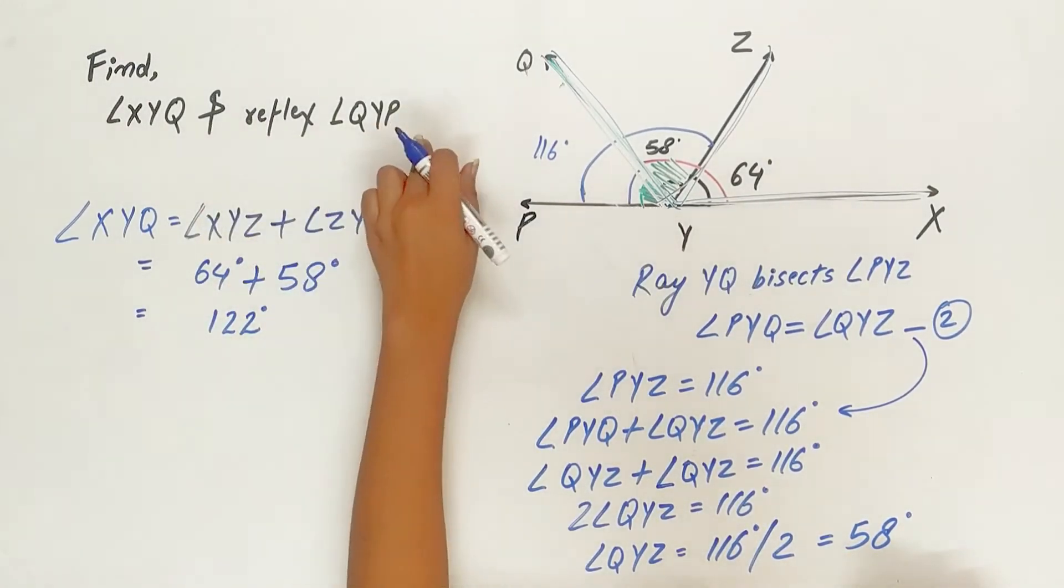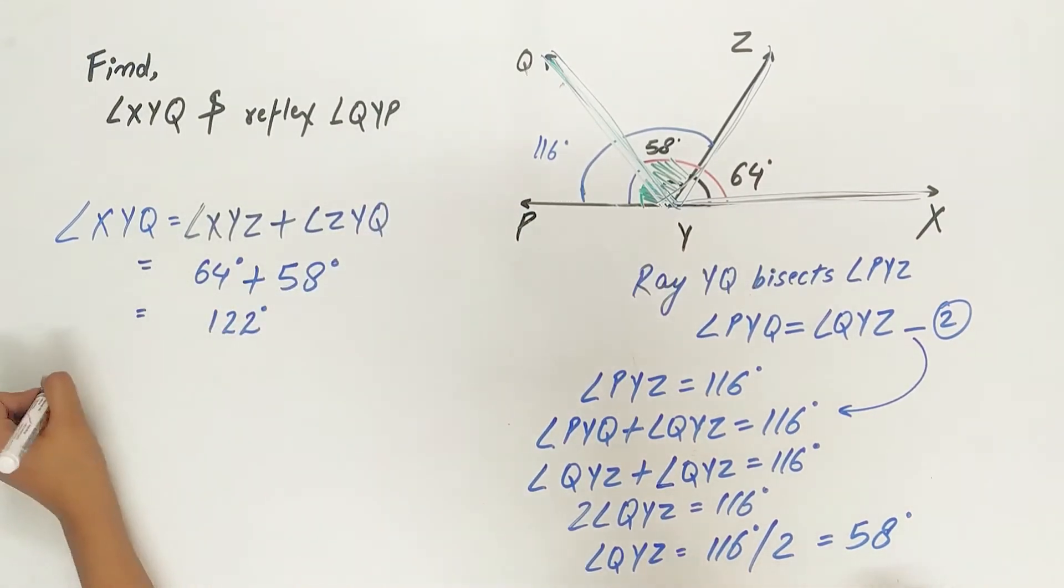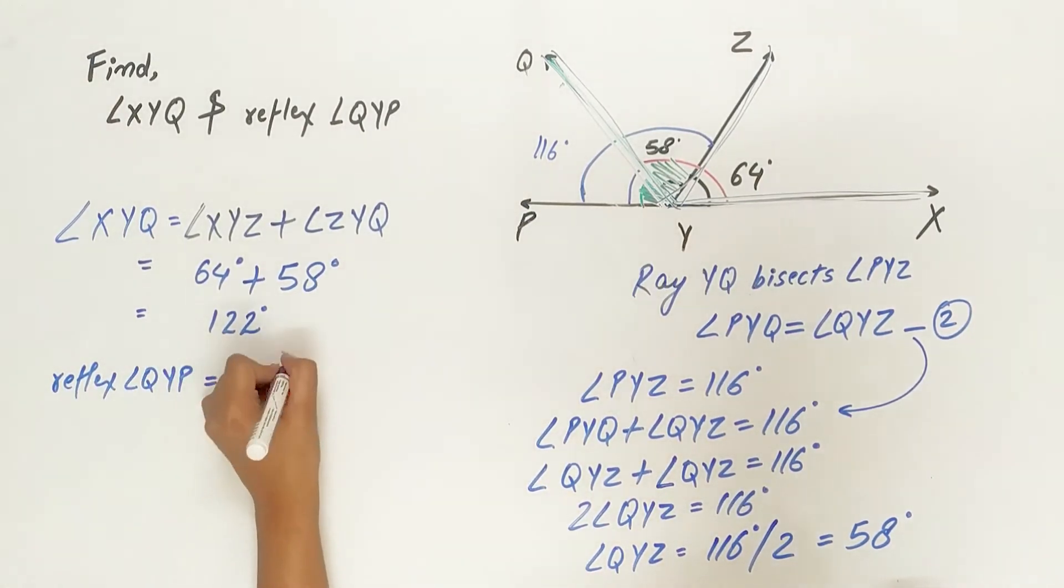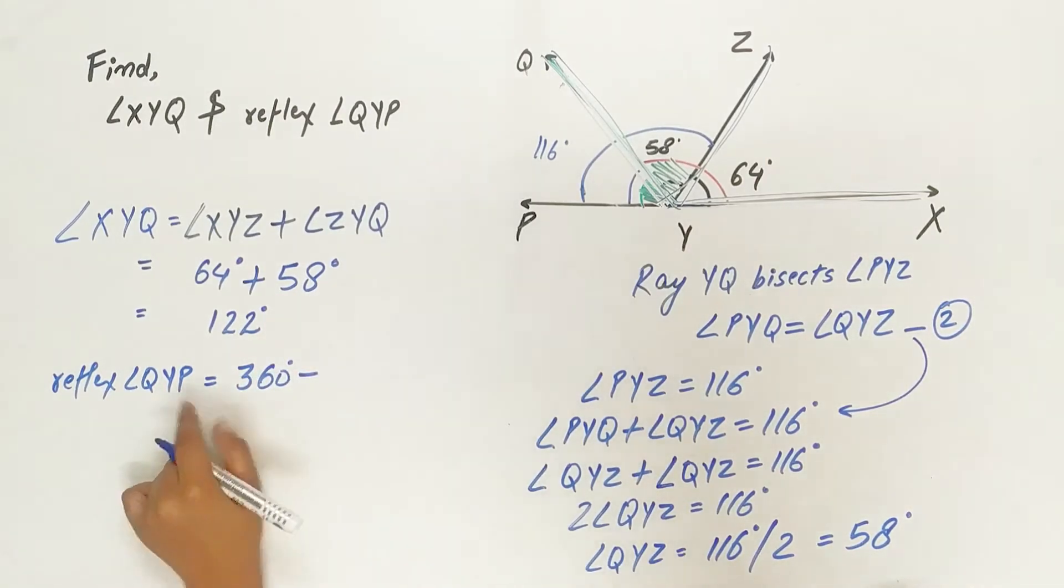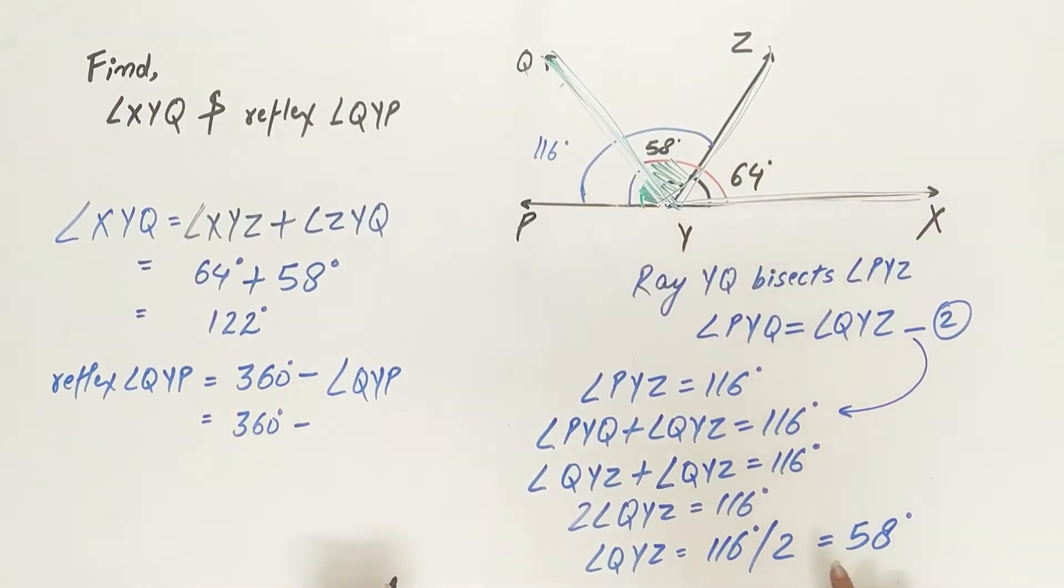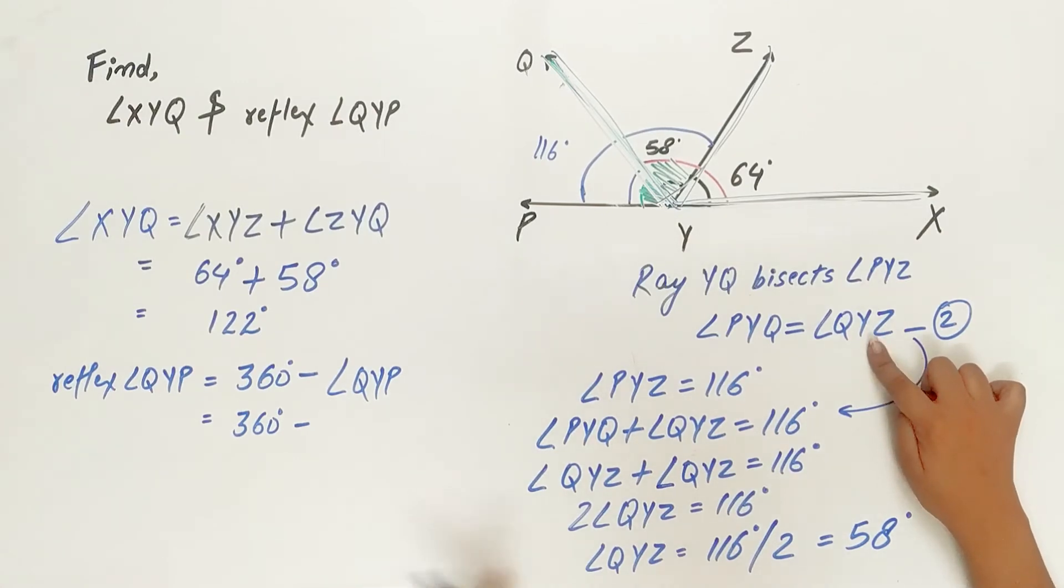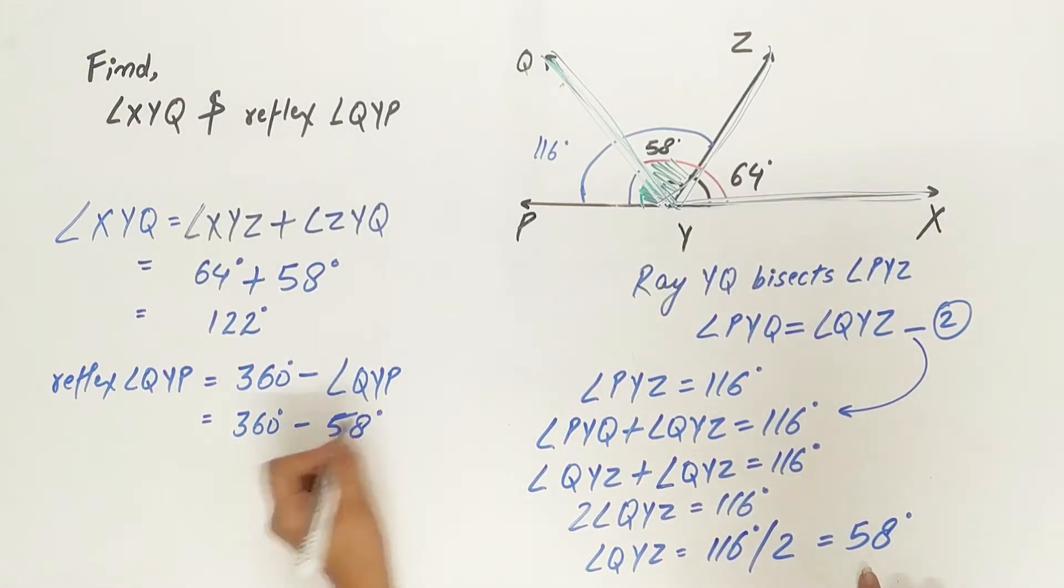Now let's find out the reflex of angle QYP. Remember how to find out the reflex of any angle: 360 degrees minus angle QYP. 360 degrees minus QYP equals QYZ, and QYZ is equal to 58 degrees. QYP is also equal to 58 degrees. So 360 degrees minus 58 degrees is 302 degrees.